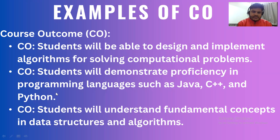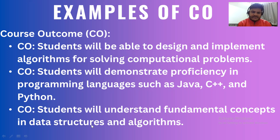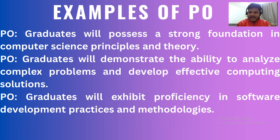Now let's look at concrete examples. For CO in B.Tech Computer Science: students will be able to design and implement algorithms for solving computational problems; students will demonstrate proficiency in programming languages such as Java, C++, and Python; students will understand fundamental concepts in data structures and algorithms. For PO: graduates will possess a strong foundation in computer science principles and theory; graduates will demonstrate the ability to analyze complex problems and develop effective computing solutions; graduates will exhibit proficiency in software development practices and methodologies.